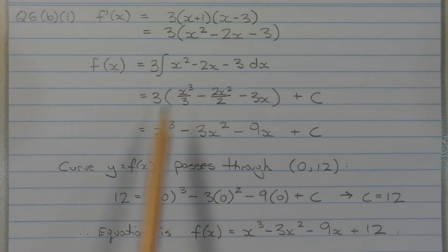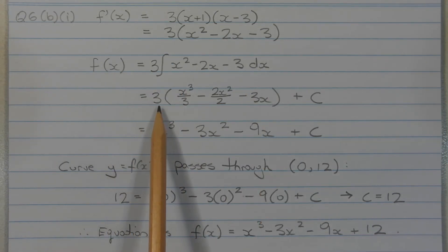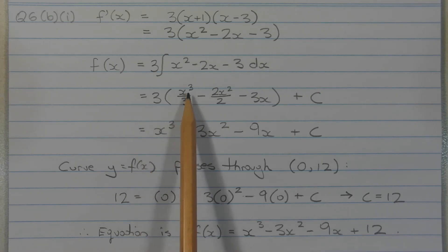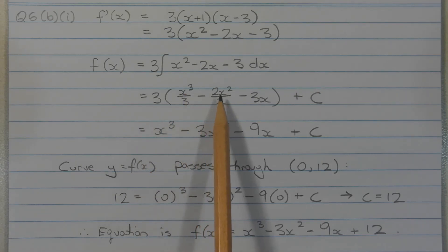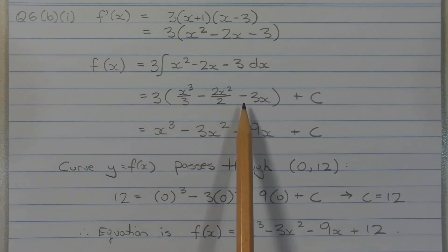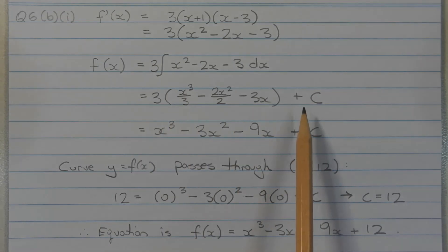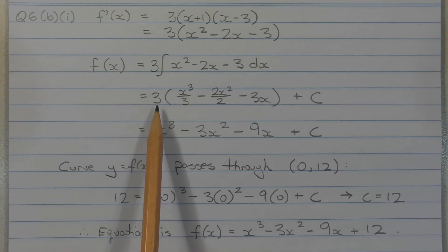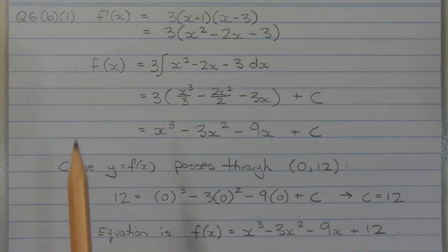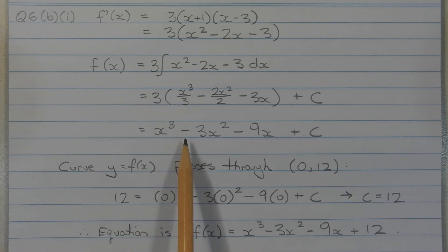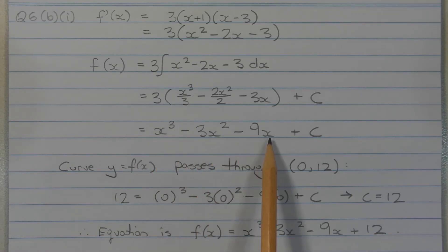Performing the integration, we get f(x) is equal to 3 times (x cubed over 3 minus 2x squared plus c). Multiplying through the 3 to all terms inside the bracket, we get f(x) is equal to x cubed minus 3x squared minus 9x plus c.